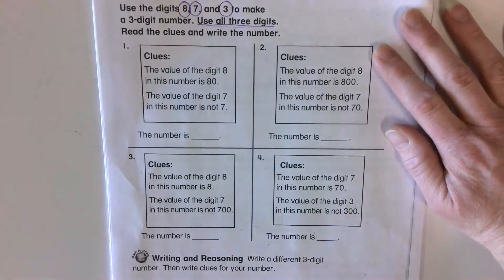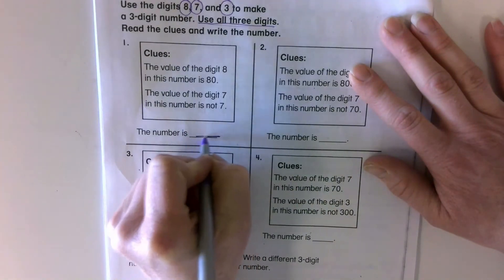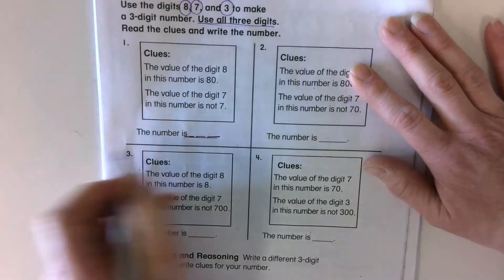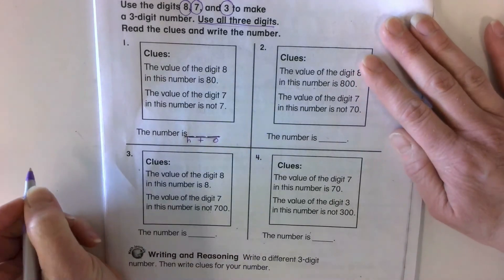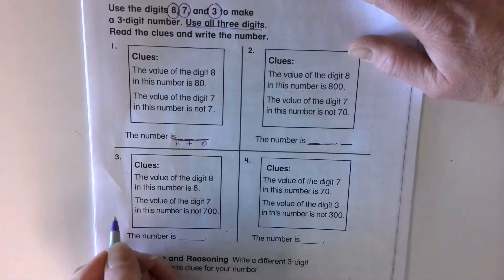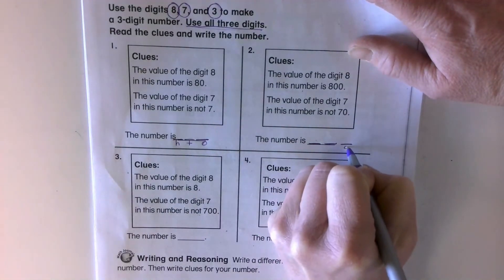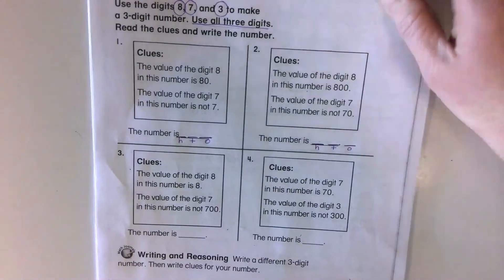Now when I'm doing this, I always make my three lines for each spot. For ones, tens, and hundreds. Always do that. That's going to help keep you a lot more organized. Ones, tens, hundreds. And do the same here.